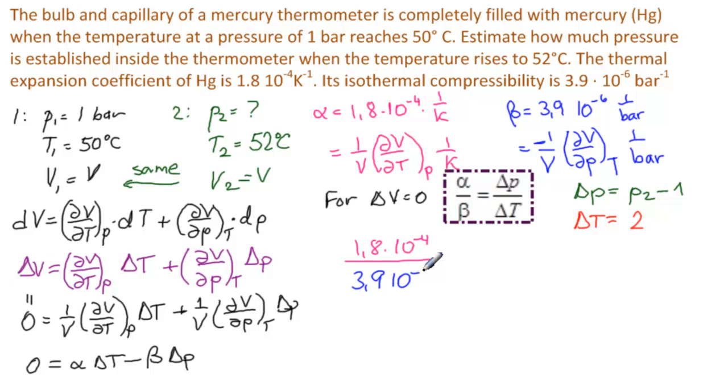So we have 1.8 times 10 to the minus 4 divided by 3.9, 10 to the minus 6 equals P2 minus 1 over 2. So what does P2 equal?